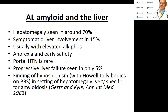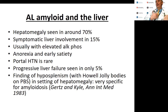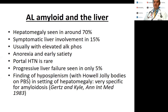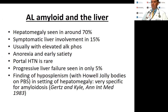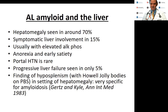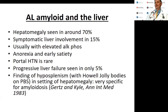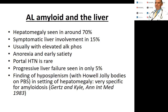Liver involvement: about 70% of patients have an enlarged liver, but many mechanisms exist including right heart failure. Only about 15% have symptomatic amyloid in the liver. Classically they have an elevated alkaline phosphatase, nonspecific anorexia, and early satiety. Portal hypertension is quite rare; progressive liver failure occurs in about 5%. Interestingly, if you see evidence of hyposplenism — Howell-Jolly bodies on peripheral blood smear — combined with a really enlarged liver, this is reportedly very specific for amyloid involving the liver.